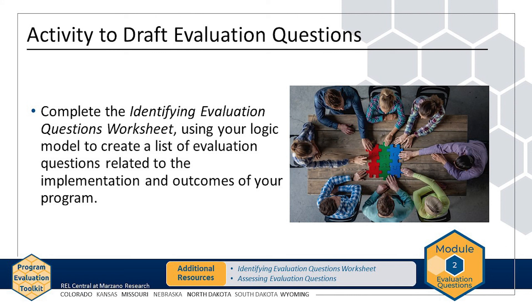Now that you have looked at an example, it is time for you to draft and revise evaluation questions for your program. At the end of Chapter 1, you drafted initial evaluation questions for your program, identifying the aligned logic model components and categorizing the questions as process or outcome. If you have not done this yet, you can find the Identifying Evaluation Questions worksheet on the Resources page of the website. Now use the PARSEC framework to examine the questions you drafted at the end of Chapter 1. Keep these criteria in mind as you revise your questions and draft additional questions. A checklist for the PARSEC framework called "Assessing Evaluation Questions" is available on the Resources page of the website.